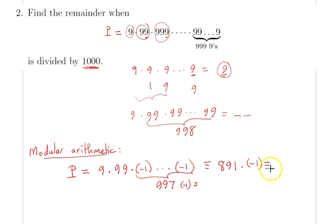So that would be congruent to 891 in mod 1000, which is congruent to negative 109 times minus 1, and finally we get that P is congruent to 109.